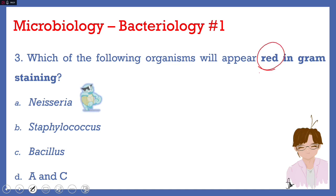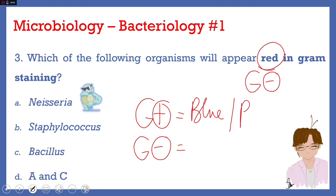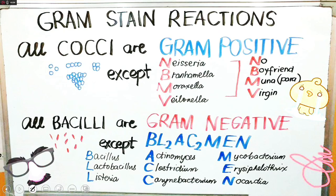The answer is letter A, Neisseria. Red in gram staining means we have a gram-negative bacteria. As a review: gram-positive bacteria will appear blue or purple, while gram-negative bacteria will appear pink or red. There is a general rule — all cocci are gram-positive and all bacilli are gram-negative, but there is a list of exceptions.